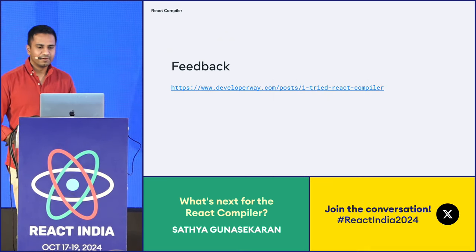The compiler uses its knowledge of JavaScript and the rules of React to automatically memoize values within your components and hooks. If it detects any breakages of the rules, it will automatically skip over them and continue to compile the rest of your app. I recommend everyone go look at the Rules of React documentation — it explains all of the rules in detail. The ESLint plugin codifies all of this, so if you violate any rules in your app, the plugin will warn you and make sure your app is not buggy.